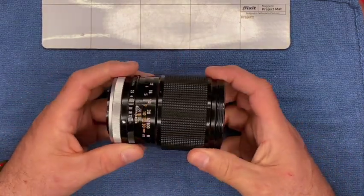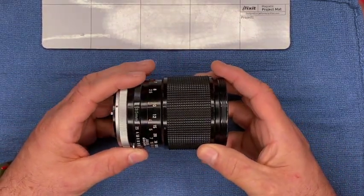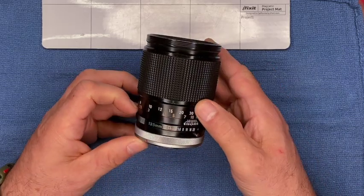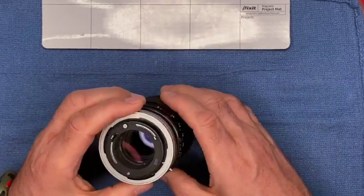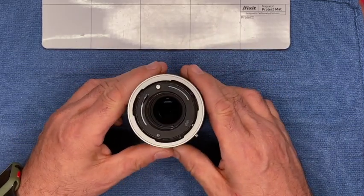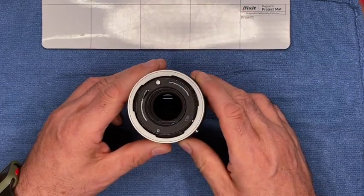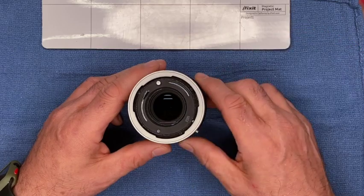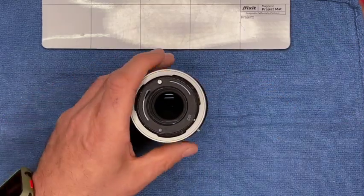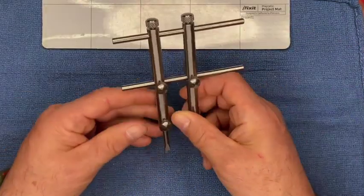In this video we're going to take apart an FD 135 2.5 lens. One thing different about this lens is you have to remove this lens group before you can actually physically remove the mount, and to do that you're going to need...